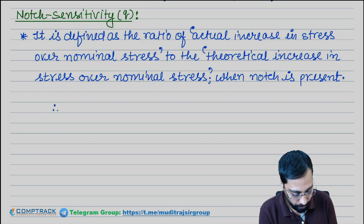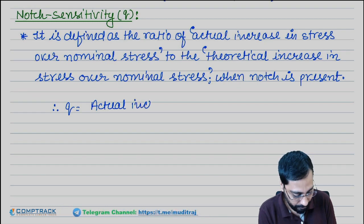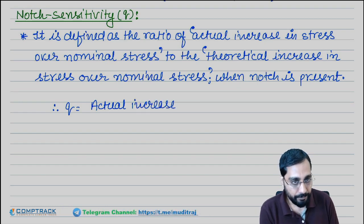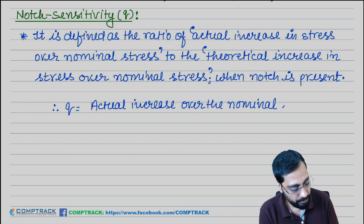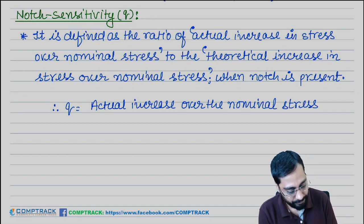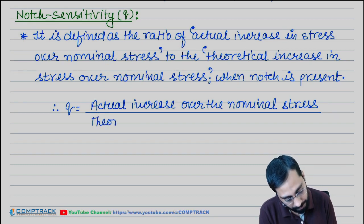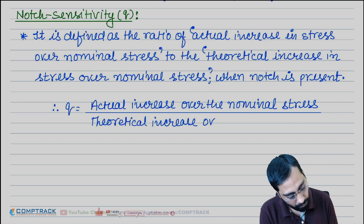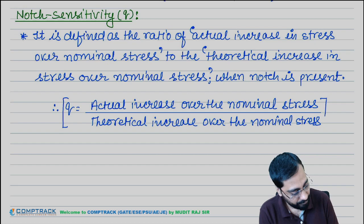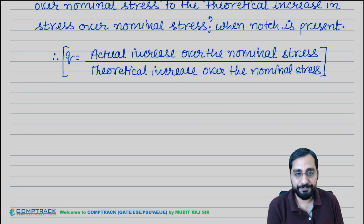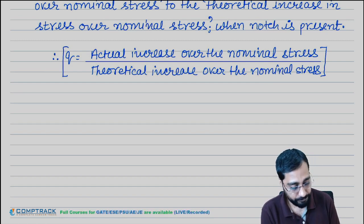So q will be equal to the ratio of actual increase over the nominal stress, divided by the theoretical increase over the nominal stress, when notch is present.